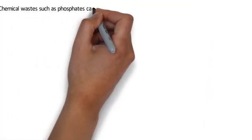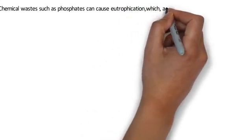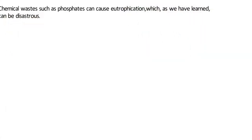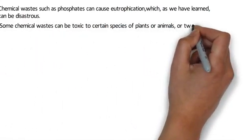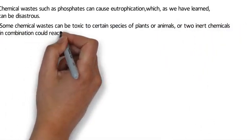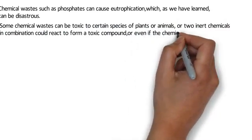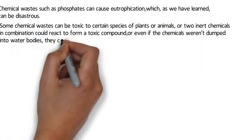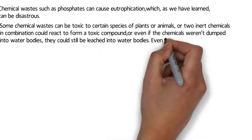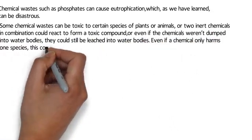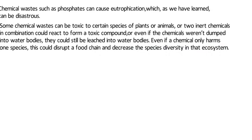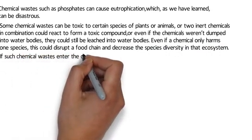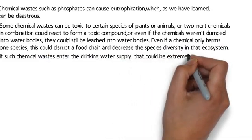Water pollution. Chemical wastes such as phosphates can cause eutrophication, which as we have learned can be disastrous. Some chemical wastes can be toxic to certain species of plants or animals, or two inert chemicals in combination could react to form a toxic compound, or even if the chemicals weren't dumped into water bodies they could still be leached into them. Even if a chemical only harms one species, this could disrupt a food chain and decrease species diversity in that ecosystem. If such chemical wastes enter the drinking water supply, that could be extremely harmful.